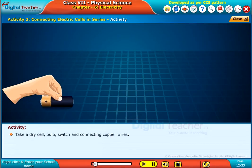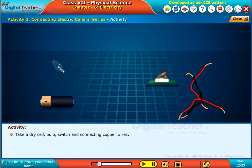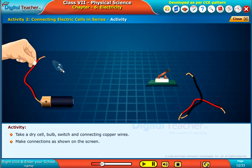Take a dry cell, bulb, switch and connecting copper wires. Make connections as shown on the screen.